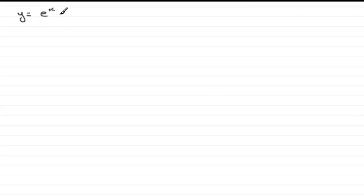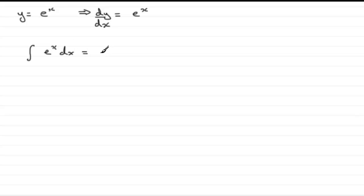Let's start with y equals e to the power x. We should already know that if we differentiate this with respect to x — in other words find dy/dx — it turns out it's still e to the power x. This means that integration, being the inverse of differentiation, means that if we're asked to integrate e to the power x with respect to x, the answer is e to the power x. We mustn't forget that a constant like plus 1 would disappear on differentiation, so in integration we have to put plus a constant — I'll call it plus c, the constant of integration.